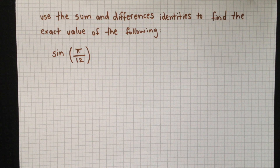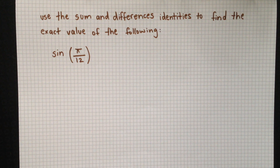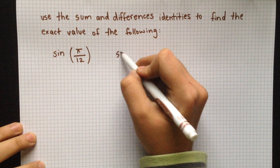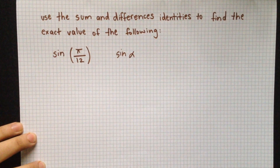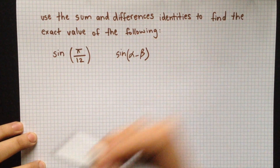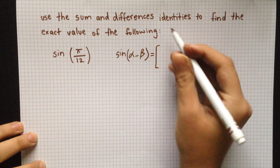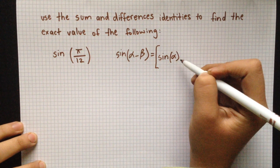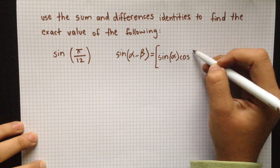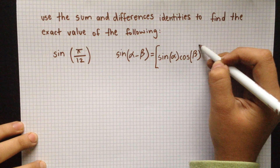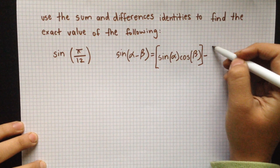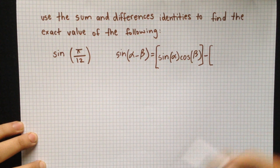The sum and difference identities are two formulas you can use to find the exact value of the expression the question gives you. For this one, I'm going to use the difference identity. This formula is: sine(α - β) = sine α cosine β minus cosine α sine β.